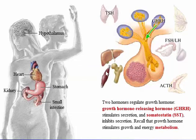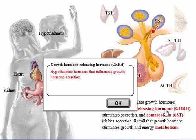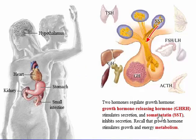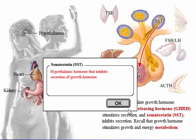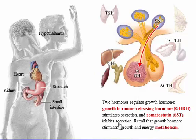Two hormones regulate growth hormone. Growth hormone-releasing hormone (GHRH) stimulates secretion, and growth hormone-inhibiting hormone — also called somatostatin — inhibits secretion. Recall that growth hormone stimulates growth and energy metabolism.